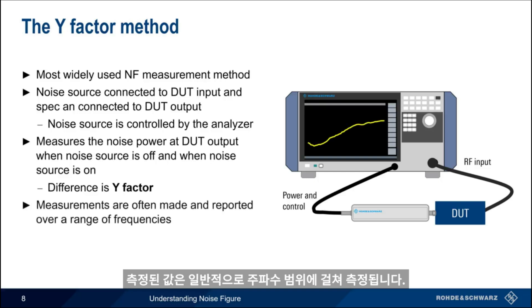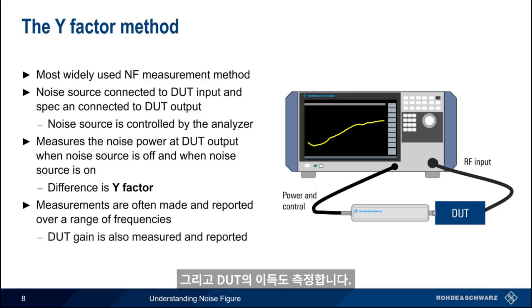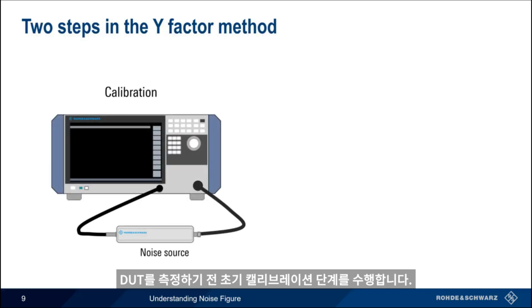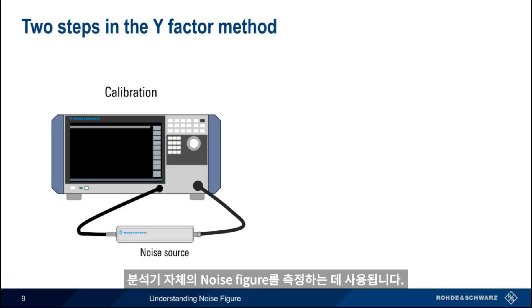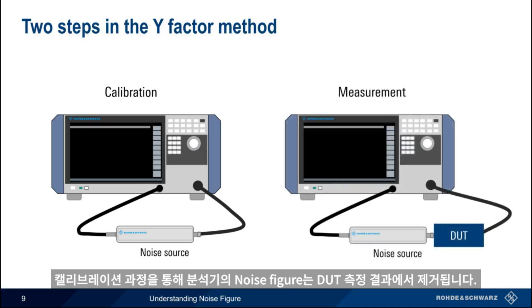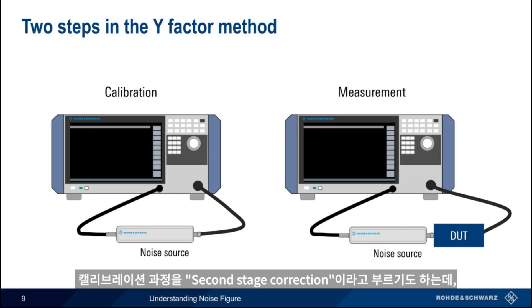Measurements are usually made and reported over a range of frequencies, since the noise figure of a device tends to be a function of frequency. Normally, the gain of the device under test is measured and reported as well. In practice, the Y-factor method usually involves two measurements. Before making measurements of the DUT, an initial calibration step is usually performed. This calibration step, which is made with the noise source attached to the spectrum analyzer input, is used to measure the noise figure of the analyzer itself. This allows the analyzer's noise figure to be mathematically removed from the DUT measurement result, enabling a more accurate measurement of the noise figure of the DUT. You may hear calibration referred to as second-stage correction, because the analyzer represents the second stage in a series of devices, each with its own noise figure.